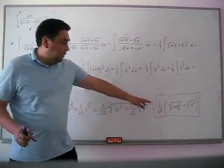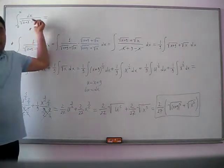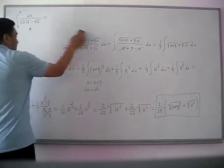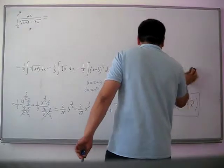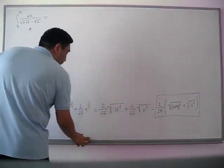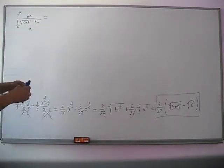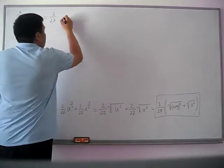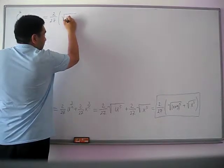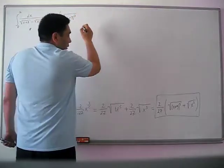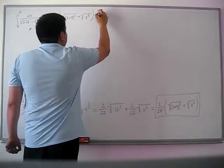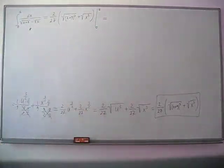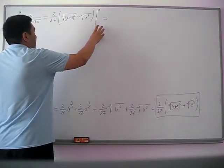Now we are ready to evaluate the definite integral. Our antiderivative is (2/27) times [√((x+9)³) + √(x³)], evaluated from the lower limit 0 to the upper limit 16. We substitute the upper and lower limits for x and then subtract the two results.